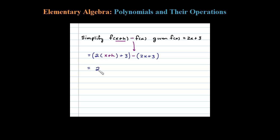We're going to distribute the 2, which leaves us with 2X + 2H + 3. And here we're going to distribute negative 1, so minus 2X and then minus 3.